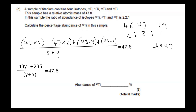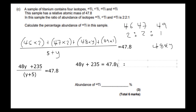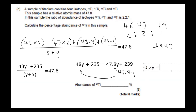To solve, multiply both sides by (Y + 5) to get rid of the denominator. The left side becomes 48Y + 235. The right side: 47.8 times Y gives 47.8Y, and 47.8 times 5 gives 239. So 48Y + 235 = 47.8Y + 239. Subtracting 47.8Y from both sides leaves 0.2Y + 235 = 239.